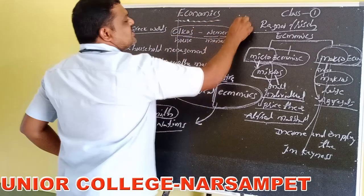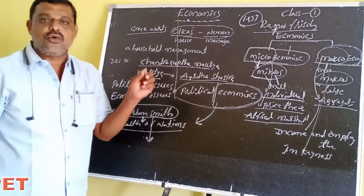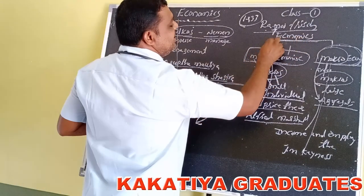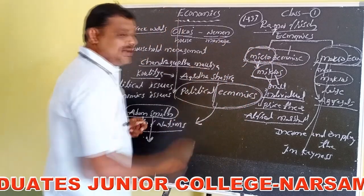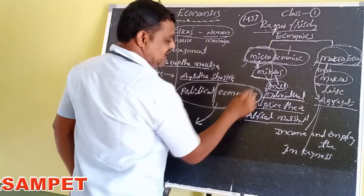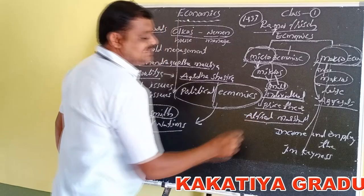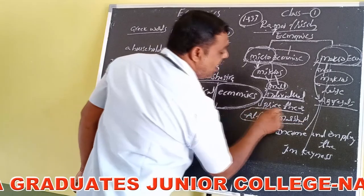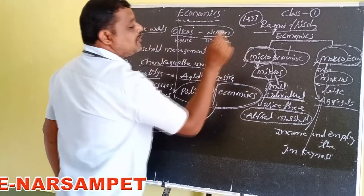Ragnar Frisch, in 1933, a professor at the University of Oslo in Norway, divided economics into two parts: microeconomics and macroeconomics. Micro is derived from the Greek word mikros meaning small. Microeconomics is studied individually and is also called price theory. Microeconomics was developed by Alfred Marshall. Therefore, Alfred Marshall is called the father of microeconomics.